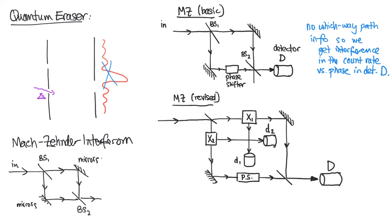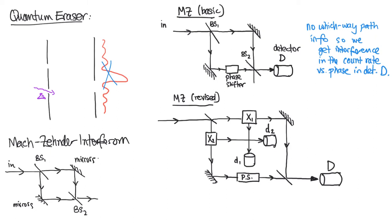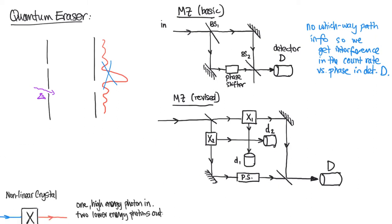Now let's add a few features to the Mach-Zehnder interferometer. Here's our revised version. We once again have an input to pass through the system and a detector at the output but we've added these two boxes with an X in them and those boxes represent what are called non-linear crystals. Let's explain what that means.